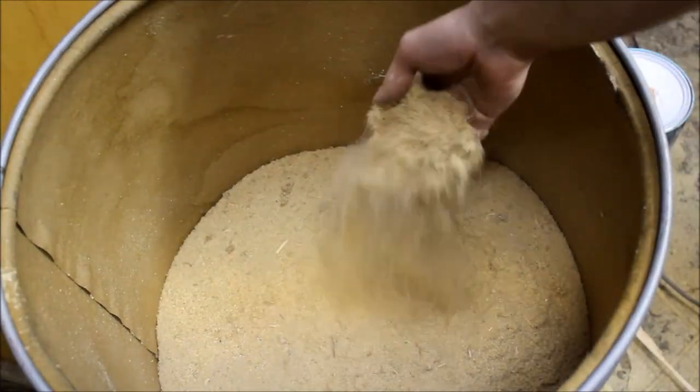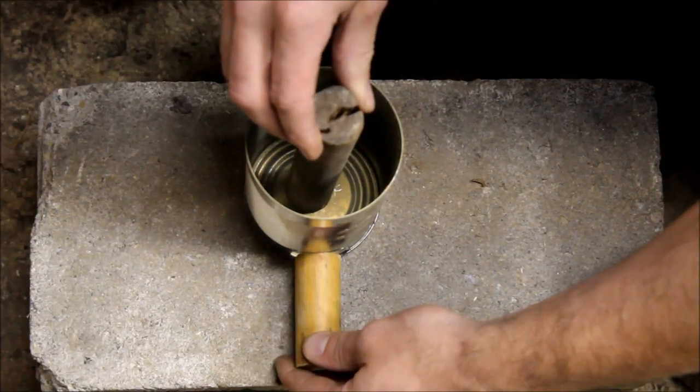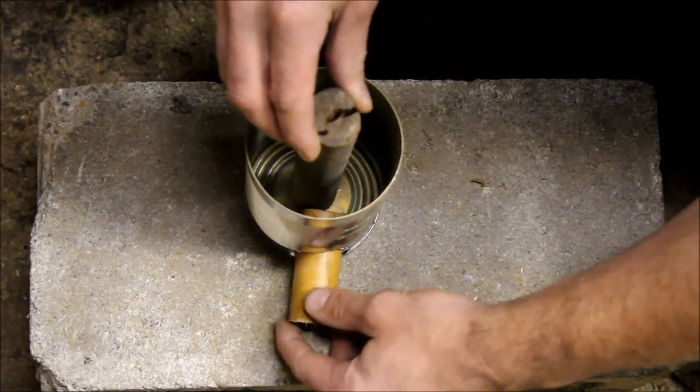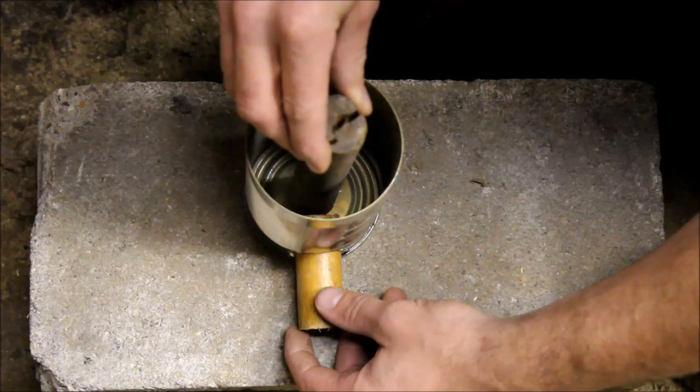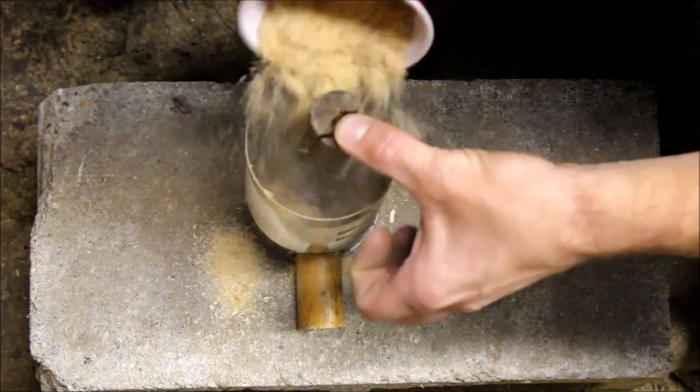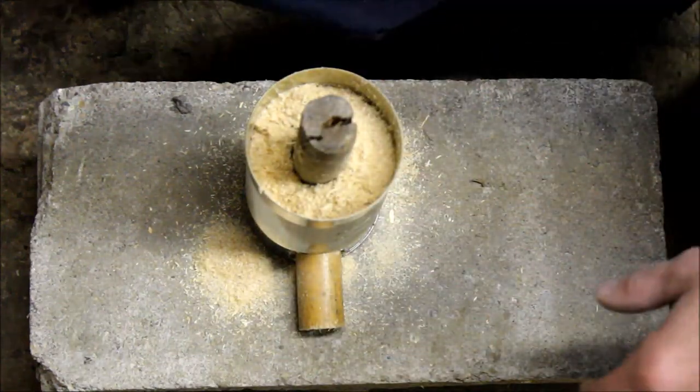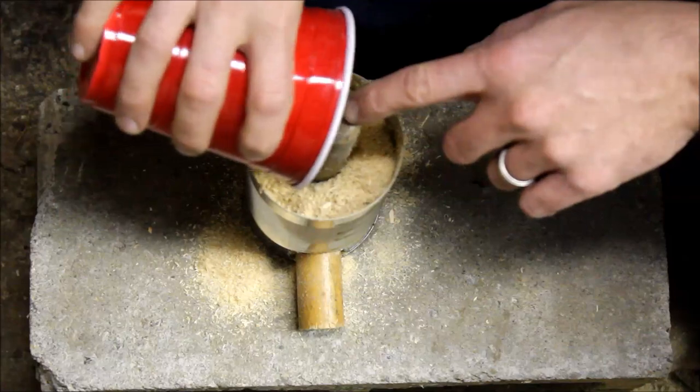And now you want to grab some sawdust. Now what I usually do is put the dowel in the middle first and insert the one on the side. Get it as close to center as you can. And then I start pouring sawdust in. I pour enough in there so that the dowel stands up on its own.